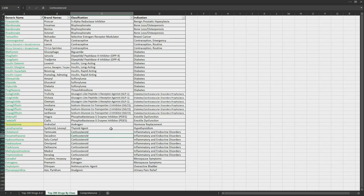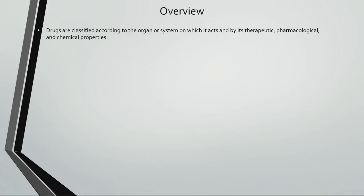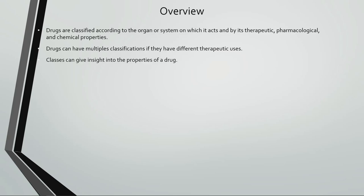It's helpful to see the different classes of drugs, especially those working in the same system, because it gives a good perspective of how drugs are related. So in this video, I'll outline a classification hierarchy for drugs. Drugs are classified according to the organ or system on which they act, and by their therapeutic, pharmacological, and chemical properties. Drugs can have multiple classifications if they have different therapeutic uses, and different formulations and routes of administration can influence indication, resulting in another classification.